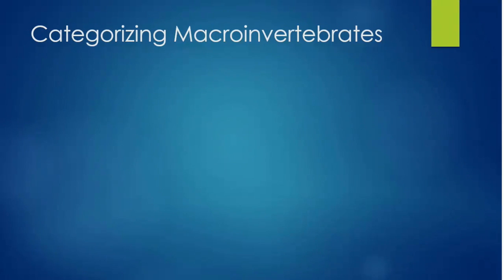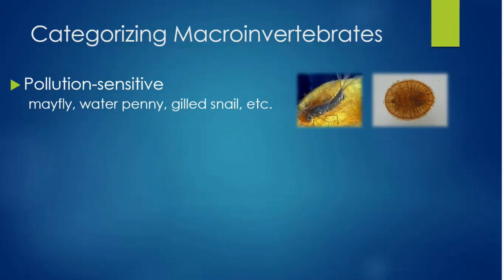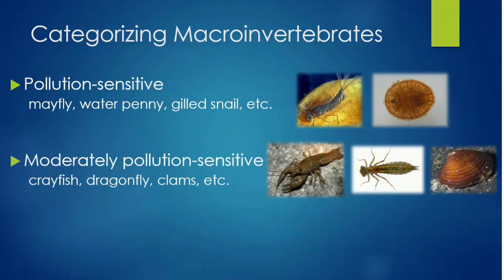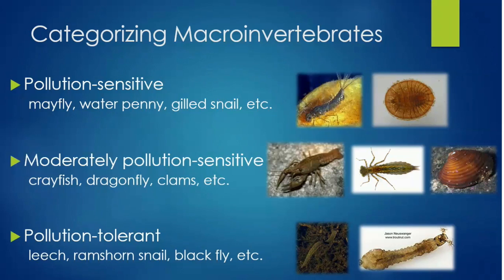Macroinvertebrate species can tolerate pollution better than others. Pollution-sensitive species like mayflies, water pennies, and gilled snails can tolerate very little pollution and will leave or die if pollution enters the habitat. Moderately pollution-sensitive species like crayfish, dragonflies, and clams will tolerate some pollution. Pollution-tolerant species like leeches, ramshorn snails, and blackfly larvae will tolerate large amounts of pollution. Importantly, these tolerances are upper limits — pollution-tolerant species could also be found in healthy streams alongside pollution-sensitive species.